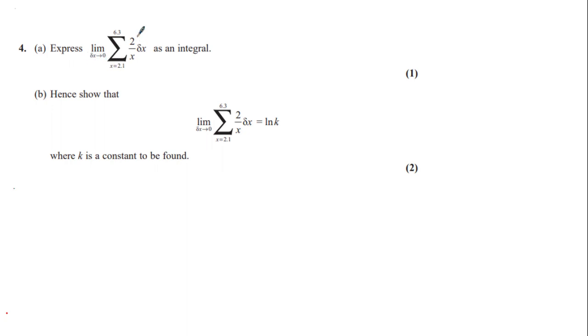We've been asked to express this Riemann sum as an integral. To express this Riemann sum as an integral, you need to recognize that 2 over x multiplied by delta x actually produces the area of a rectangle with the height 2 over x and width delta x underneath the curve 2 over x.